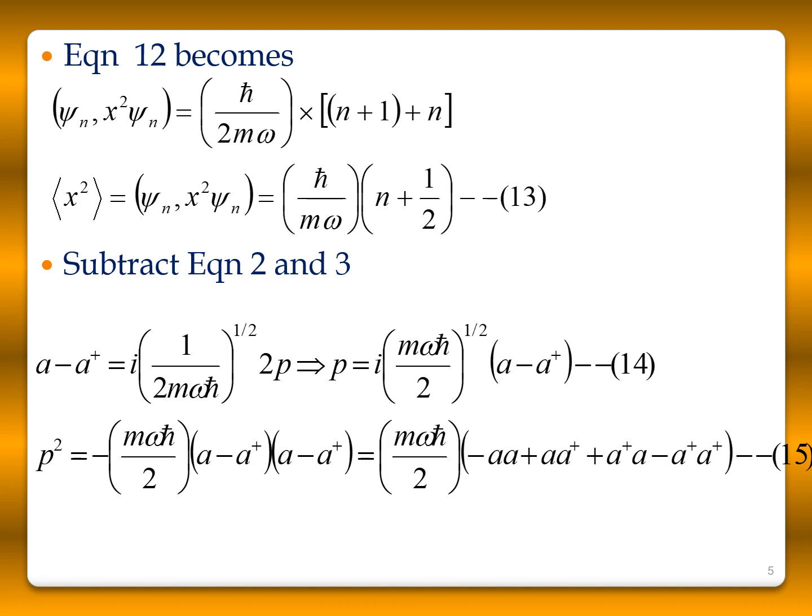Similarly for p²: subtracting the two ladder operator equations gives a − a† = i(1/2mωħ)^½ · 2p, so p = i(mωħ/2)^½(a − a†). Squaring, p² = −(mωħ/2)(aa − aa† − a†a + a†a†), which can be written as (mωħ/2)(−aa + aa† + a†a − a†a†).